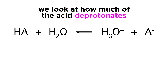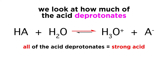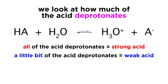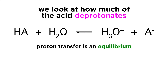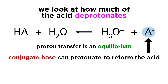The strength of an acid is measured by how much of the acid deprotonates in solution. If every single molecule of the acid loses a proton, it is a strong acid. If very few of them lose a proton, it is a weak acid. Proton transfer can be described as an equilibrium, since the conjugate base is capable of accepting a proton to become the acid again.